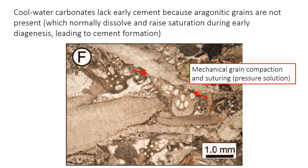Finally, the lack of aragonite in heterozoan carbonates has some important implications for the behavior of the sediment during burial. The processes of physical and chemical changes that occur after deposition are grouped under something called diagenesis. Normally, aragonite in the sediment is metastable at surface conditions and may dissolve during the early parts of diagenesis, raising saturation state in the pore water and ultimately leading to the formation of early diagenetic cements. But because heterozoan carbonates lack aragonite, these early cements don't form; instead, grains are mechanically compacted and sutured together. So cool water carbonates typically lack a lot of the porosity you might find in warm water or photozoan carbonates.